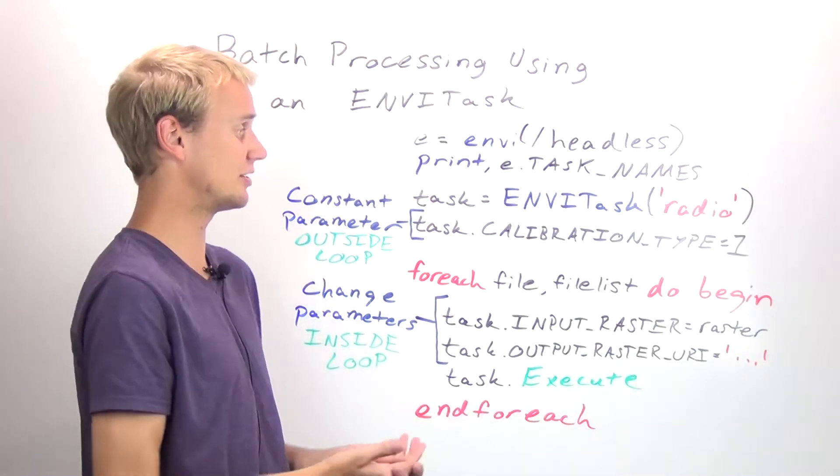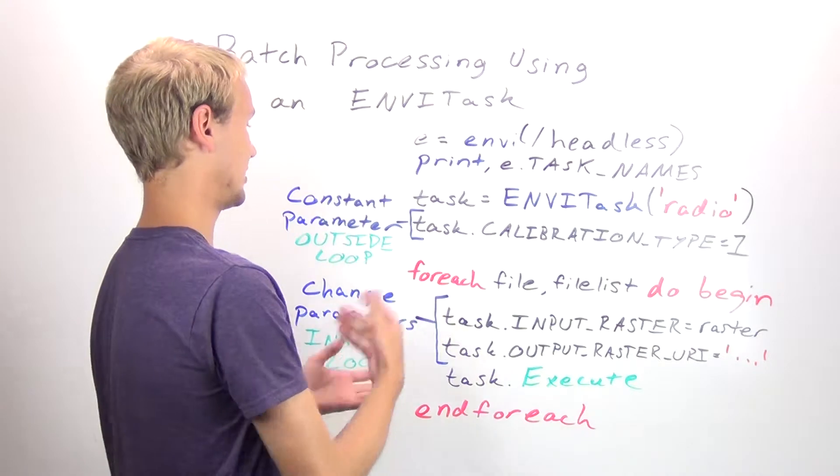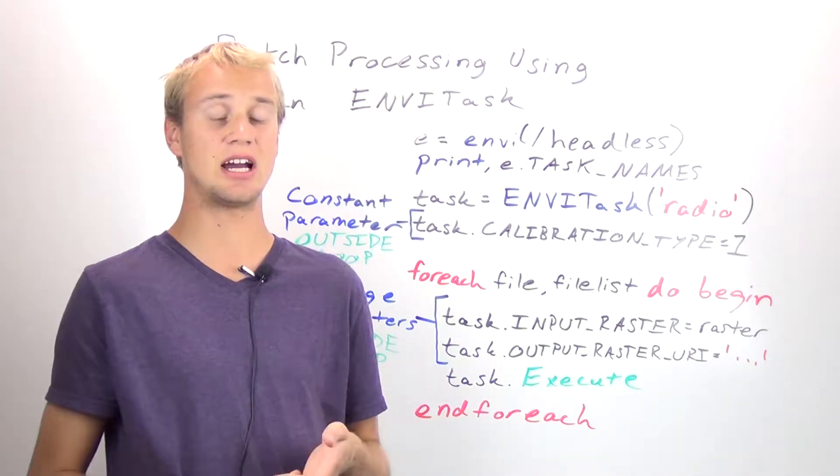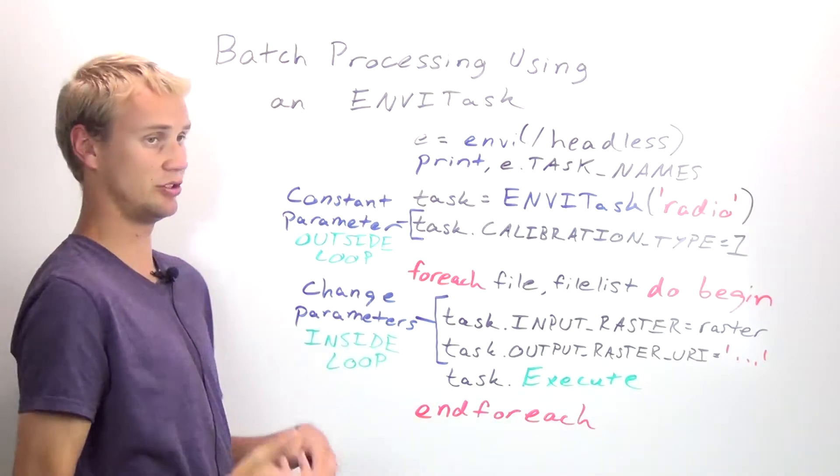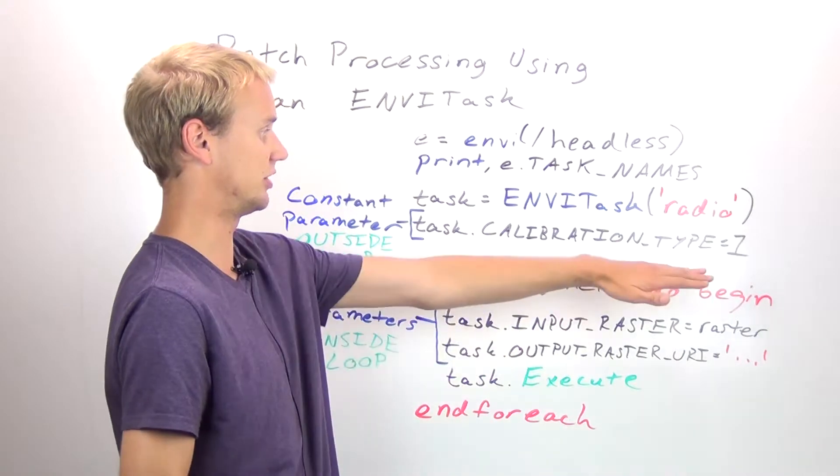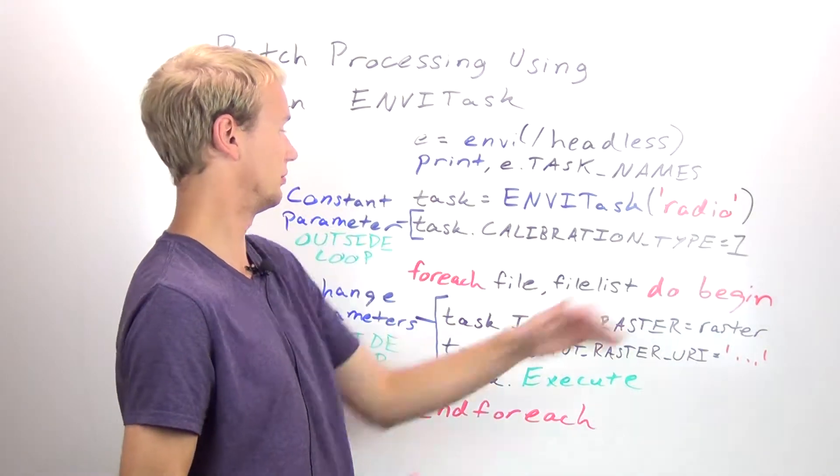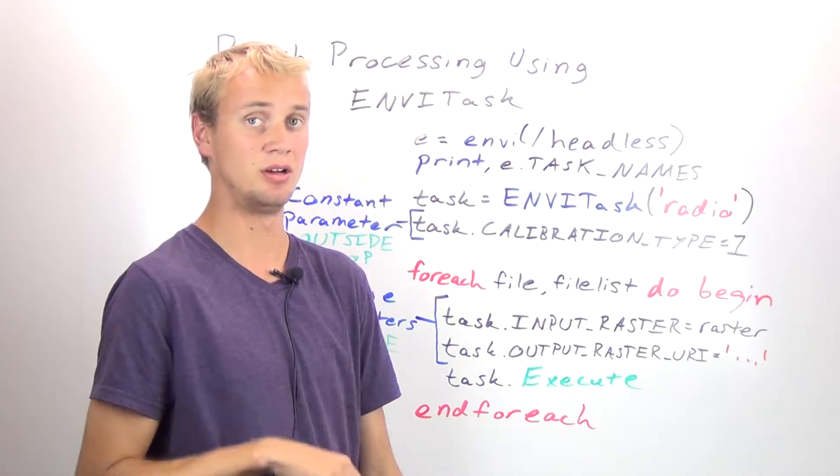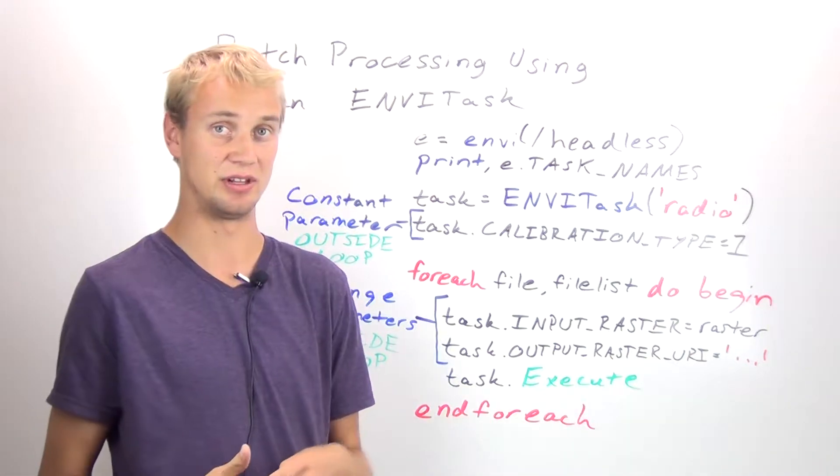If you have multiple files that you're working on, you should make sure to set any parameters on your tasks that are going to be common throughout the entire batch process outside of the loop. In this case, here we're going to do all of our files to be calibrated to reflectance, so by setting this to the calibration type of 1, we're going to set that right away and not have to set that within a loop.